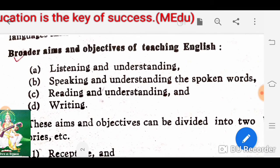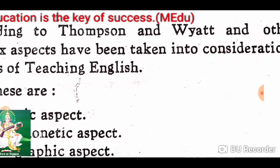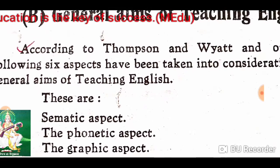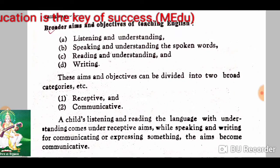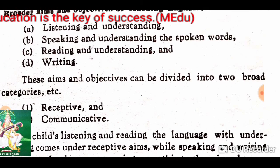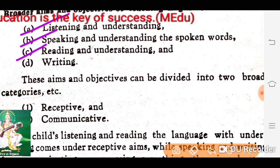Then, broader aims and objectives of teaching English. We know there are four basic skills, called broader skills. They are: listening and understanding, speaking and understanding the spoken words, reading and understanding, and writing. These are the broader aims of English teaching.